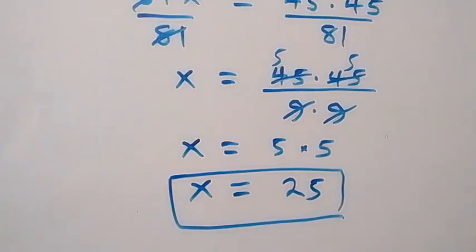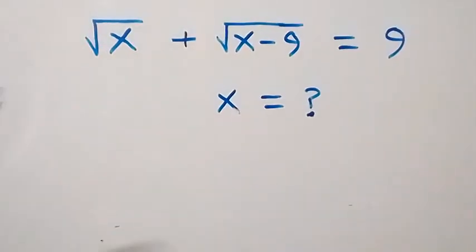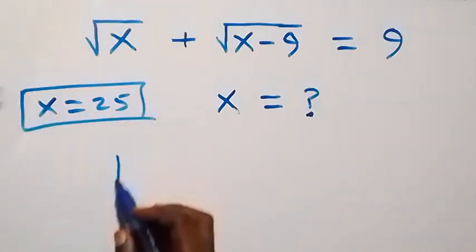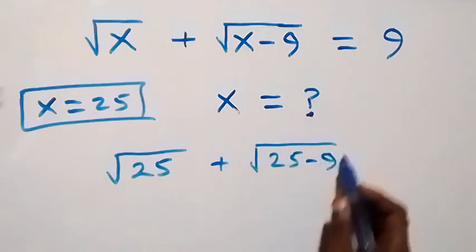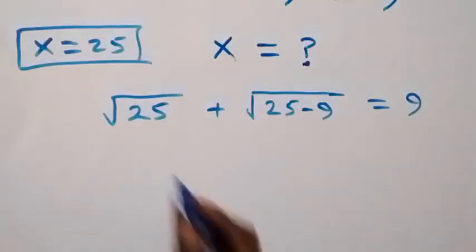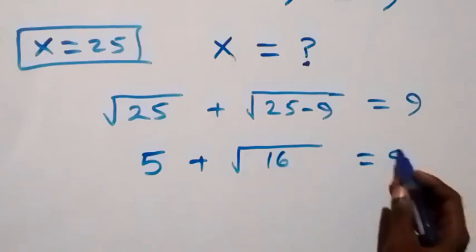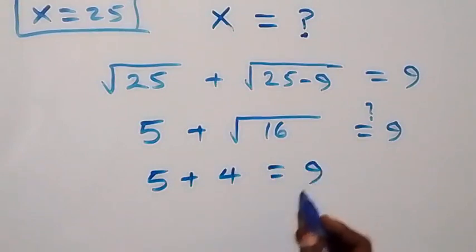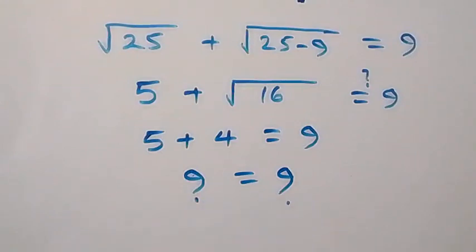The solution is x equals 25. Let's check to verify: substituting x equals 25 into the original problem, we get root 25 plus square root of (25 minus 9). Root 25 is 5, and 25 minus 9 is 16. So this becomes 5 plus root 16, that's 4, which equals 9. And 5 plus 4 is indeed 9, so the left hand side equals the right hand side, confirming x equals 25 satisfies the problem.